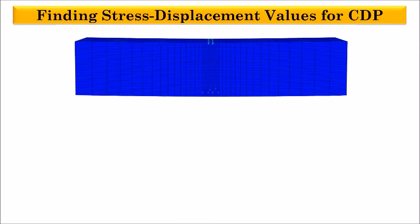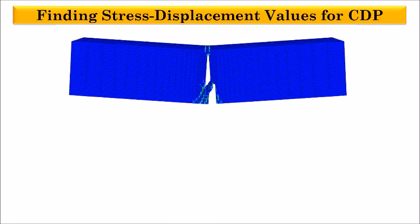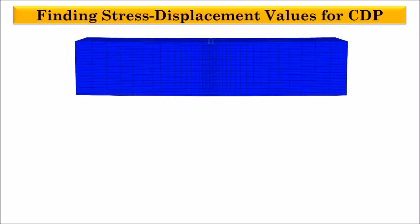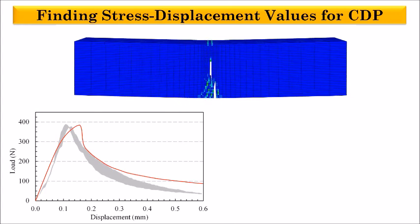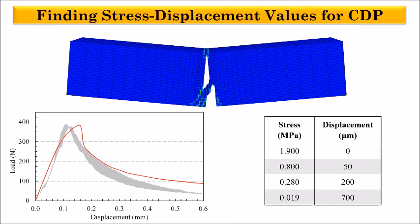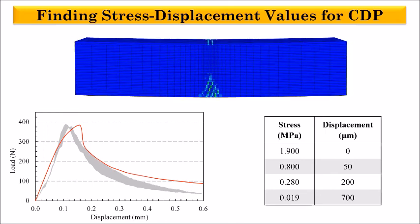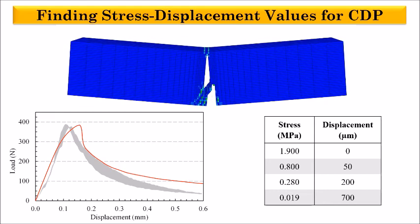We simulate a macroscale displacement-control three-point bending test and extract the value of displacement versus total reaction force at the top middle section of the simulation. Then, through trials, the numerical and experimental findings are matched. Finally, we obtain a set of values which reasonably describes the post-failure behavior of the material due to tensile cracking.